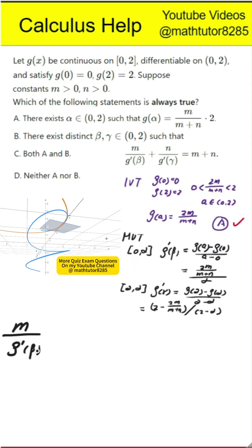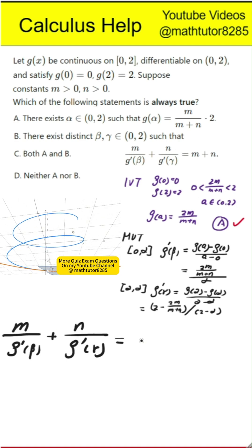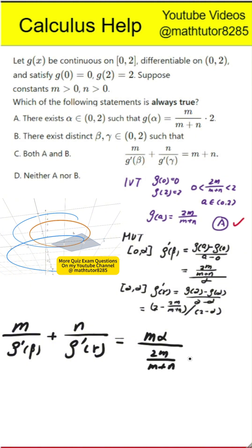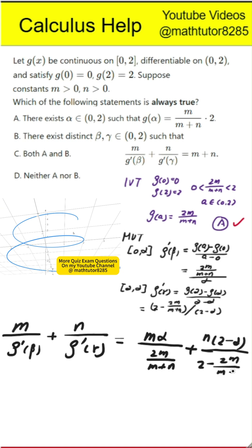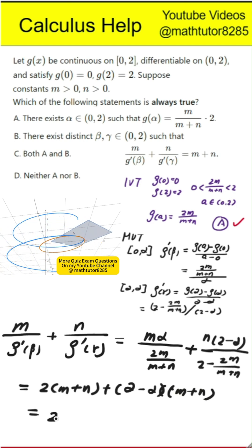Now compute m divided by g prime of beta plus n divided by g prime of gamma. Substituting the expressions from step 2, this equals m times alpha divided by 2m over m plus n, plus n times 2 minus alpha divided by 2 minus 2m over m plus n. After simplification, this becomes alpha times m plus n plus 2 minus alpha times m plus n, which equals 2 times the sum m plus n.